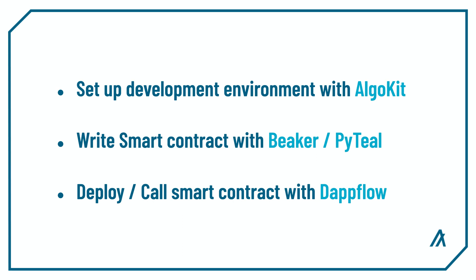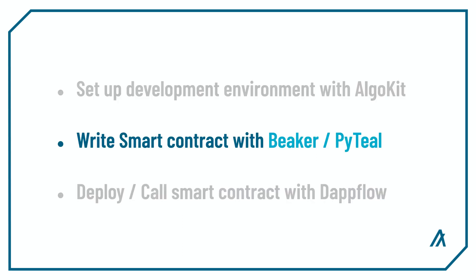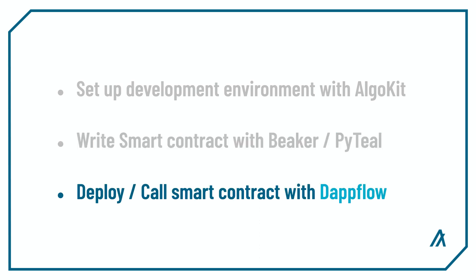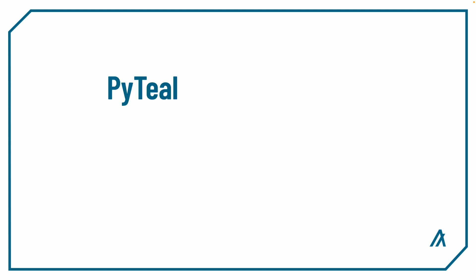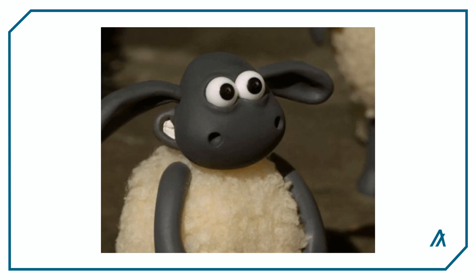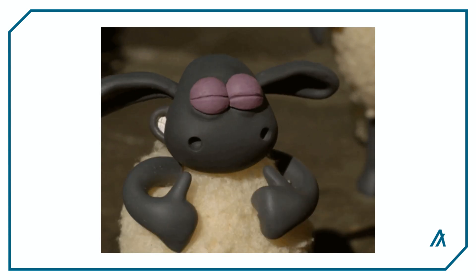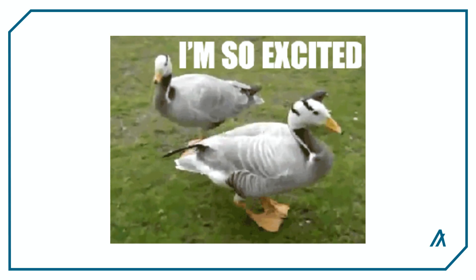And that's it. Today we covered how to set up your development environment using AlgoKit, how to write a simple Algorand smart contract with Beaker and PyTeal, and how to deploy and call your smart contract using Dappflow. This video is too short to cover all the powerful features of Algorand smart contracts, but stay tuned for a complete video series on PyTeal, Beaker, TEAL, and other Algorand layer 1 features. Hopefully this video has taught you how to start developing on the Algorand blockchain, and I look forward to seeing you build your application on Algorand.